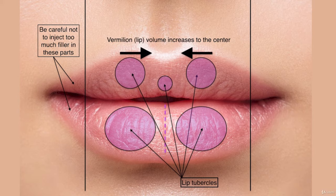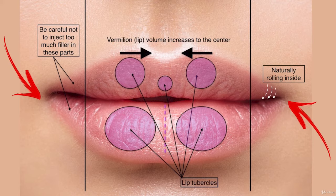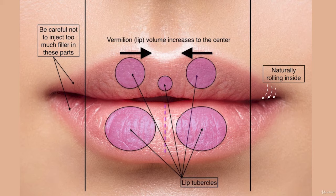How do you volumize the lip? The key point is to keep more volume in the center. This is how the lip is naturally shaped — the lip should be rolling inside as you go to the sides; it always looks better. Some patients want the sides or corners very full, but do not over-treat the sides because it might look strange and will definitely not look natural.